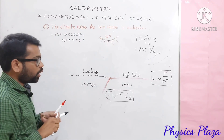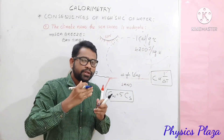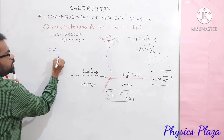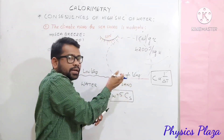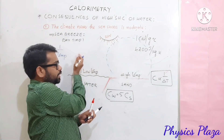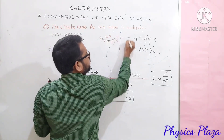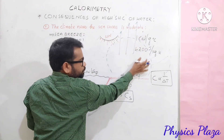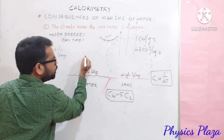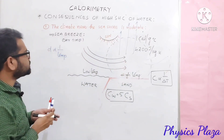Due to this, the air above the sand gets heated faster, its temperature increases. As density is inversely proportional to temperature, the air above the sand becomes lighter, its density decreases, and it rises up. So a low pressure region is created above the land. To compensate that low pressure region, cold breeze from the sea moves towards the land — this is called sea breeze.